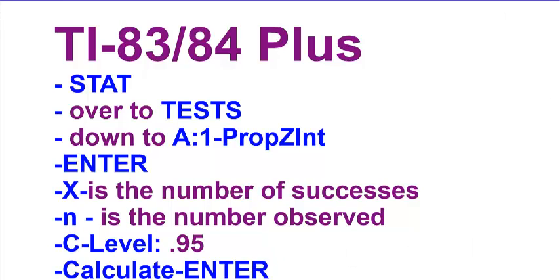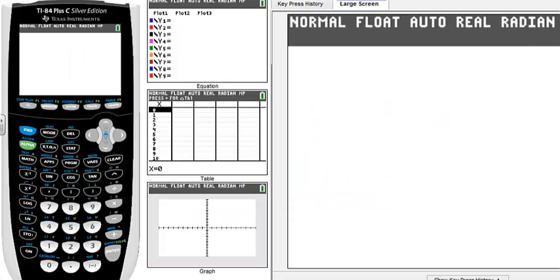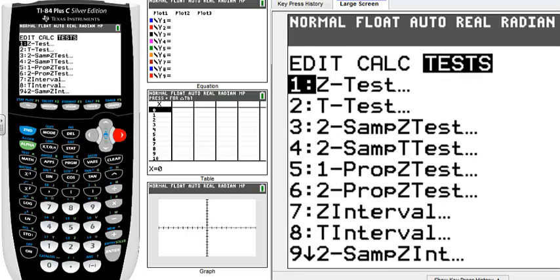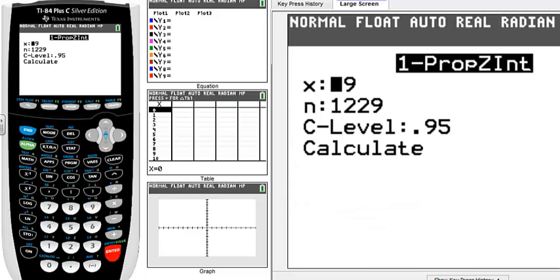So let's look at an example. What is the 95% confidence interval if you ask 799 U.S. teens if they misrepresent their age online to gain access to websites, and 392 of them said yes? The first thing we want to do is find the 95% confidence interval using the calculator. Here's what your calculator looks like — first push STAT, then go over to TEST, then down to A1, and press ENTER.